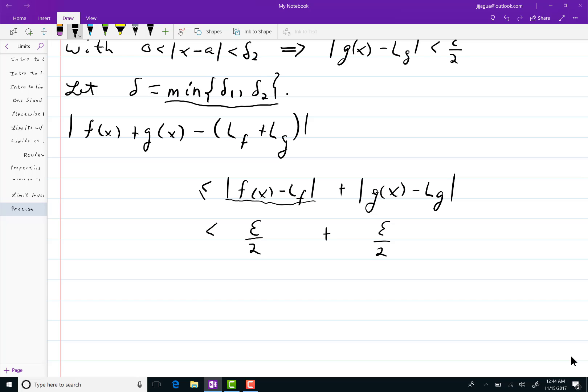So therefore, this inequality between g of x minus l sub g and epsilon over 2 holds. Well, together, those things end up equaling epsilon as we wished.